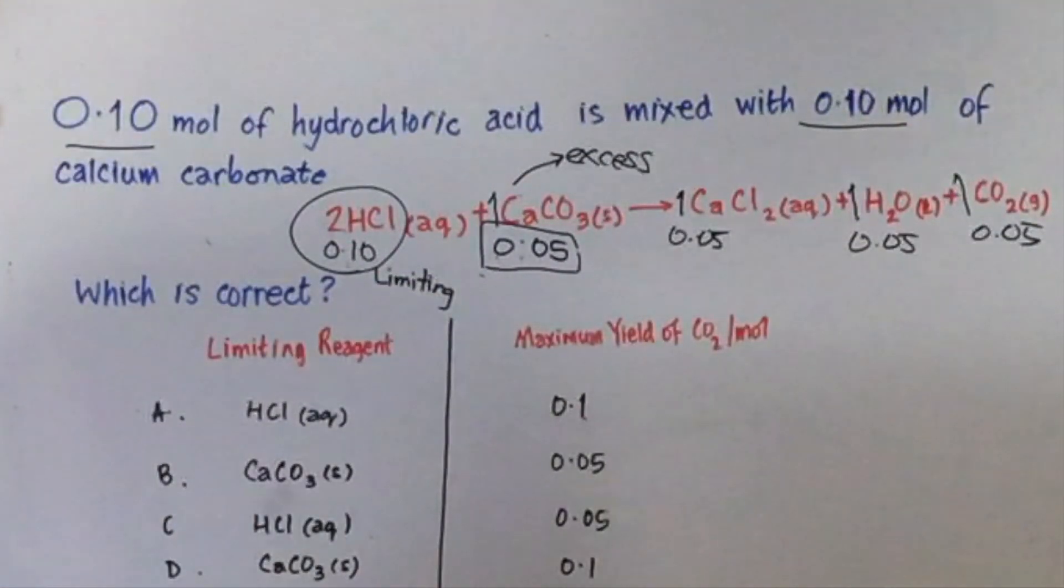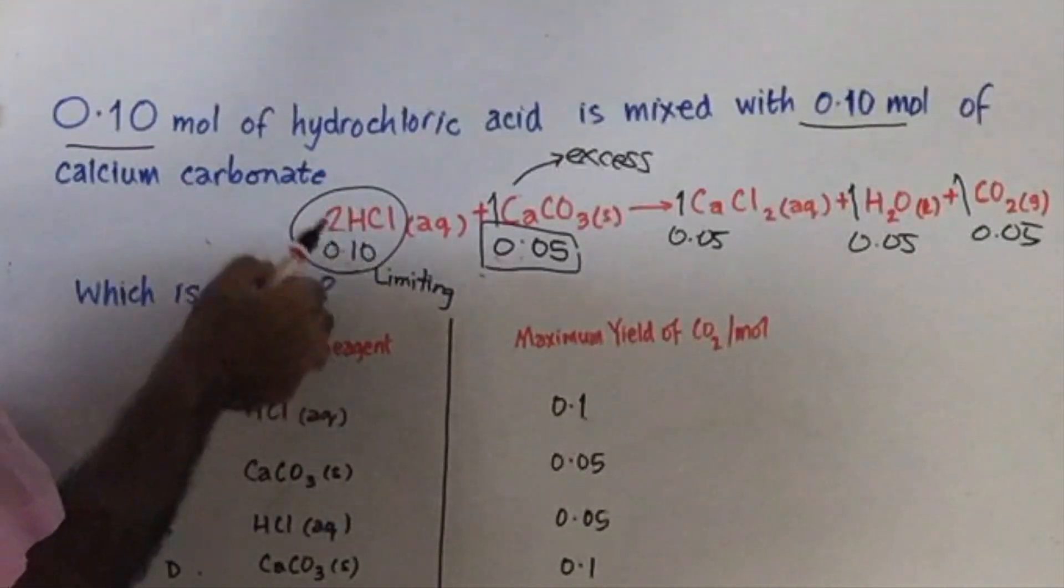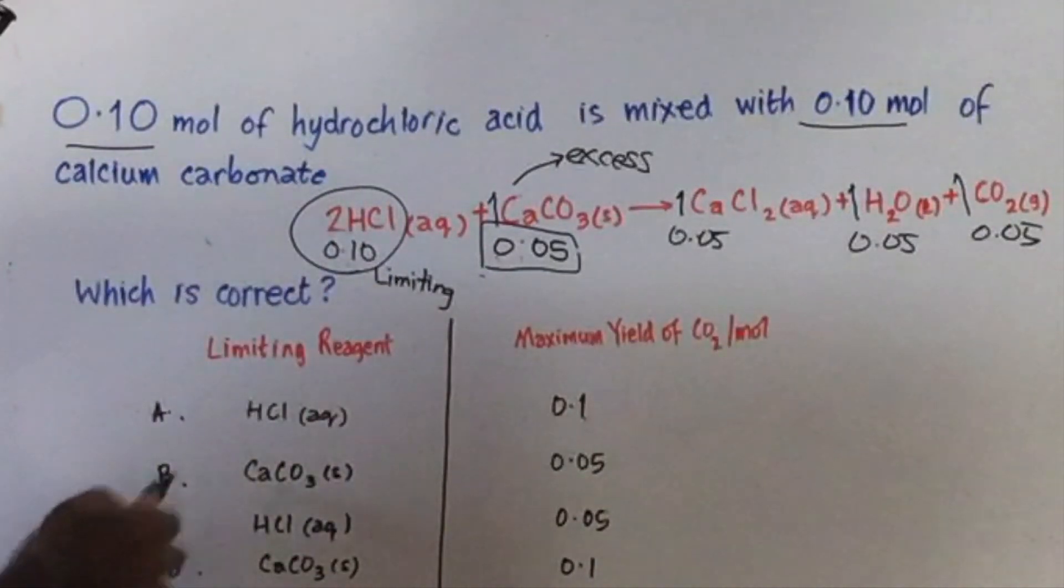This reagent, the calcium carbonate, of which only 0.05 would react. To get all of the 0.10 to react, you'll need 0.20 moles of hydrochloric acid, and you only have 0.10 moles of hydrochloric acid.